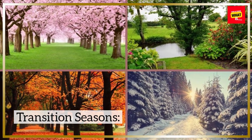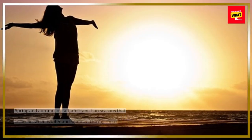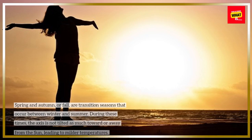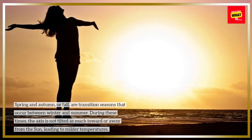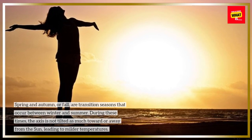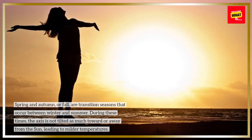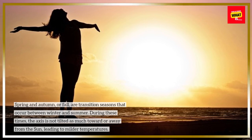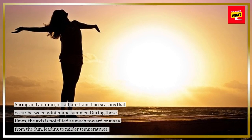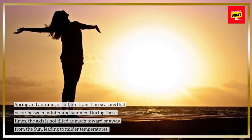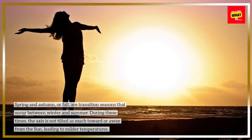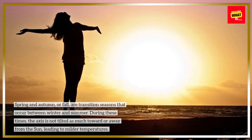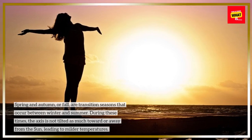Transition Seasons. Spring and Autumn, or Fall, are transition seasons that occur between winter and summer. During these times, the axis is not tilted as much toward or away from the Sun, leading to milder temperatures.